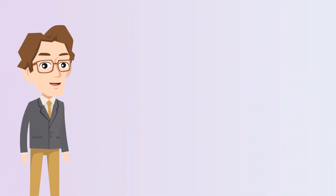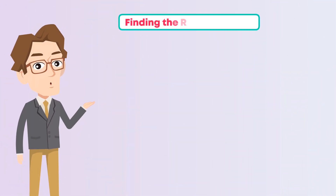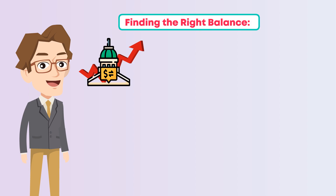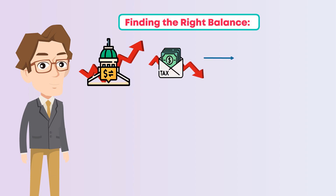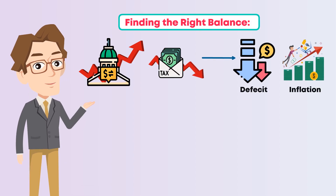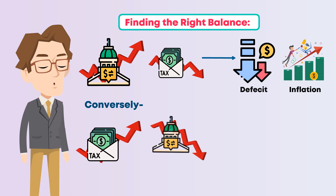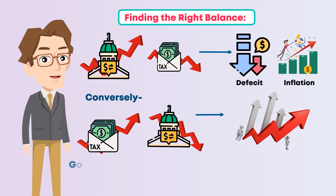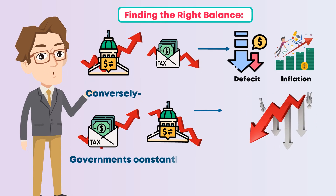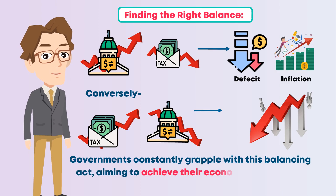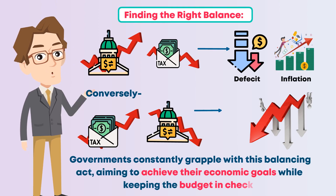The Balancing Act. The key is finding the right balance. Too much government spending without enough tax revenue can lead to deficits and inflation. Conversely, high taxes and low spending can dampen economic growth. Governments constantly grapple with this balancing act, aiming to achieve their economic goals while keeping the budget in check.